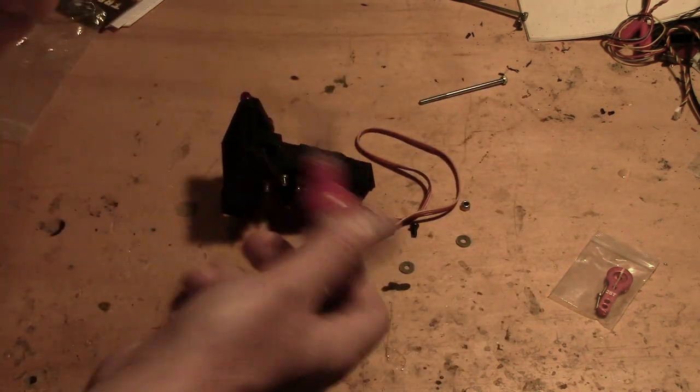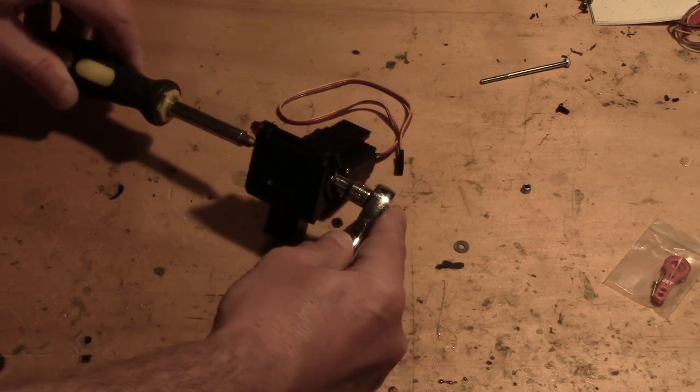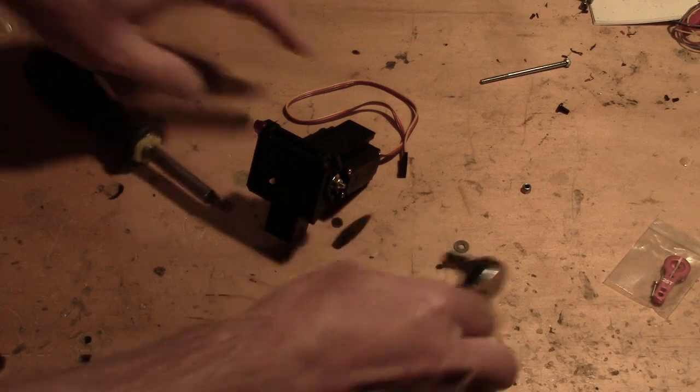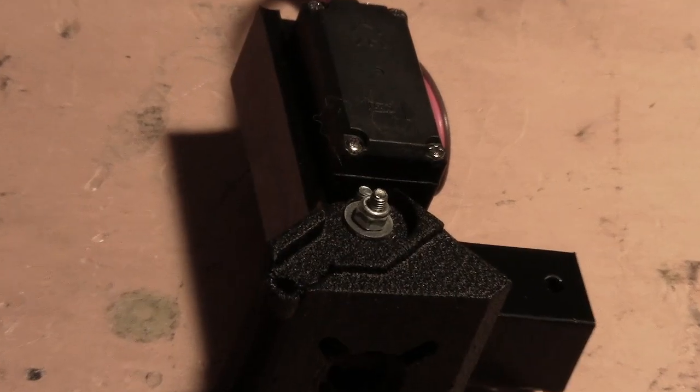Now when you tighten this nut up you probably want to go tight enough that it becomes difficult to pivot the joint, but then back it off a little bit so it's not too hard for the servo to drive that motor mount.